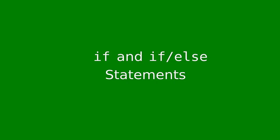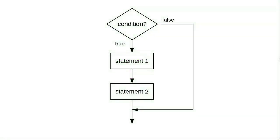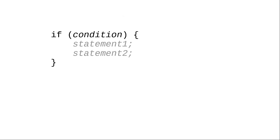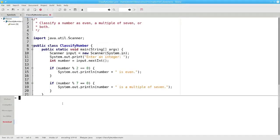Up until now, we haven't been able to test for conditions — we do the same instructions every time. The Java if statement lets us do things depending on whether some condition is true or false. If some condition is true, we do the statements inside a block. Otherwise, we don't do the statements at all. Let's write a program that asks the user for an integer. If the integer is even, it gives a message that says so. And if the integer is a multiple of 7, the program gives a message saying so.